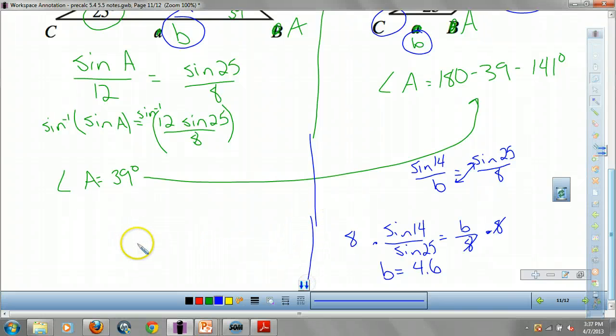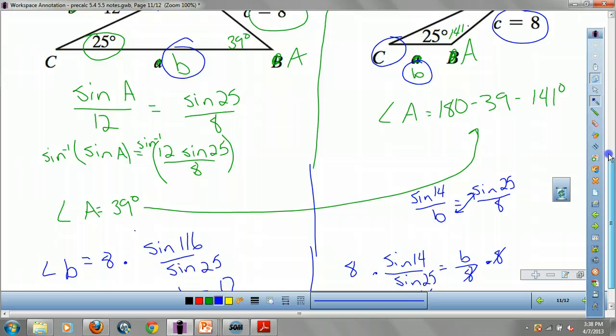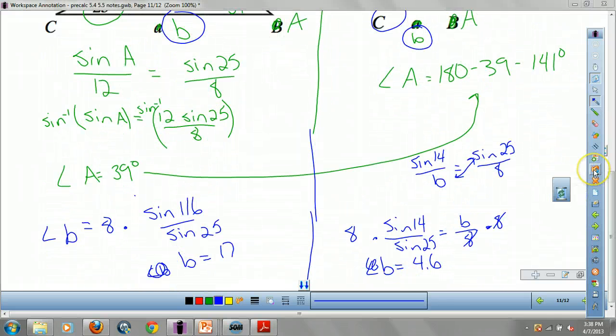Now, think about this. What's the only thing we're changing about B on this side? The angle. So B on this side is actually going to be 8 times sine of 116 divided by sine 25. I didn't have to go through the work, I'm just changing the angle, not what C was. So I plug this into my calculator. And we get side B is about 17. Which makes sense. B is my smallest side. B is my largest side. Now it's really done.